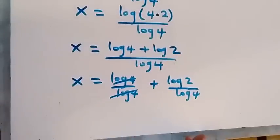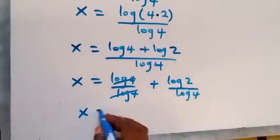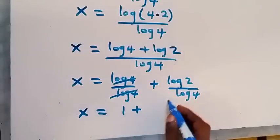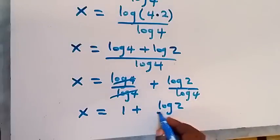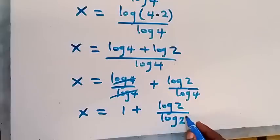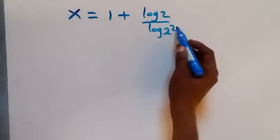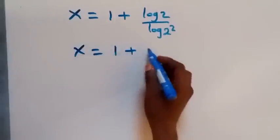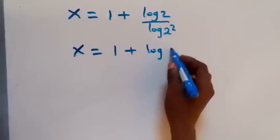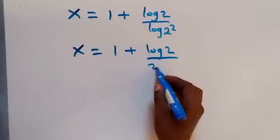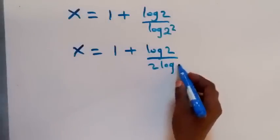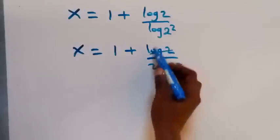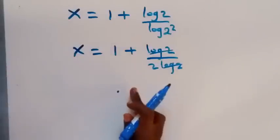From log 4 over log 4 we get 1, so we have 1 remaining. Then for the remaining term, we write log 4 as log 2 squared and apply the power law of logarithm, bringing the 2 to the front. So we have x equals 1 plus log 2 over 2 log 2, and the log 2 terms cancel.